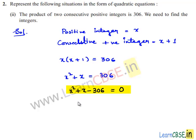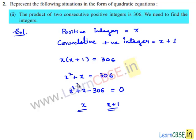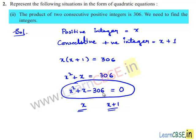This equation equals 0, where x is the positive integer found by solving this equation, and x plus 1 is the consecutive positive integer. The given condition can be represented as the quadratic equation: x squared plus x minus 306 equals 0.